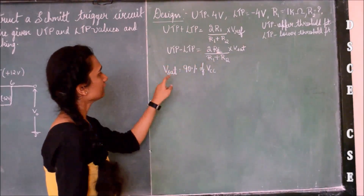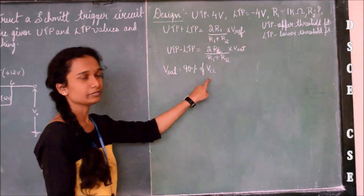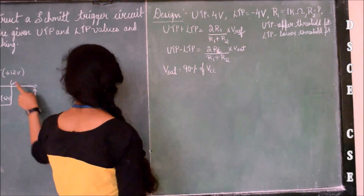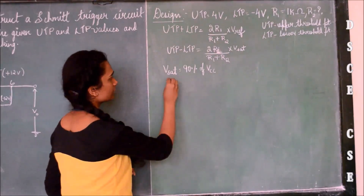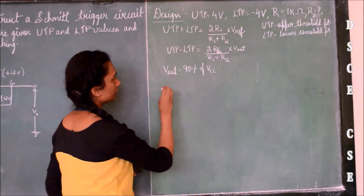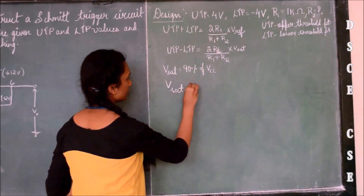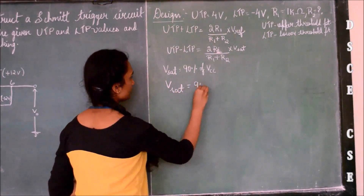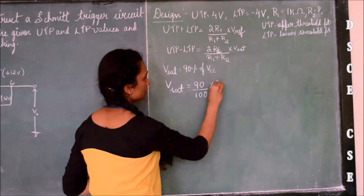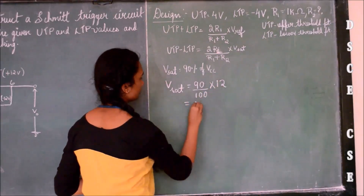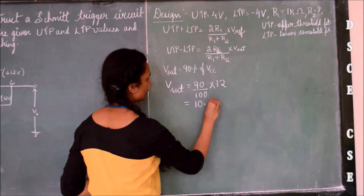Now let us calculate the value of Vsat. Vsat is 90% of VCC, where VCC is plus 12 volts. So we obtain the value of Vsat as 10.8 volts.